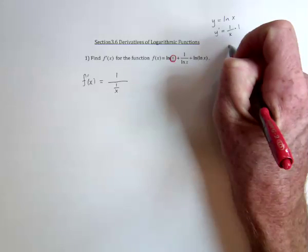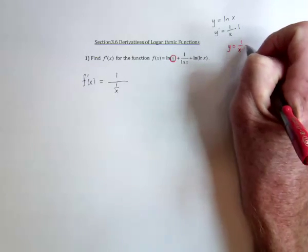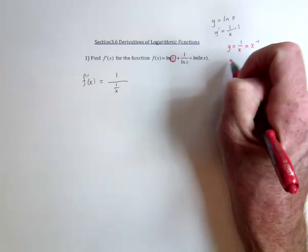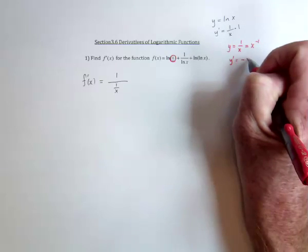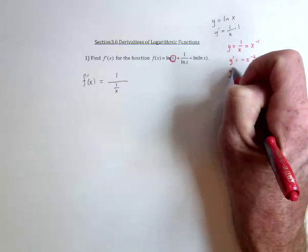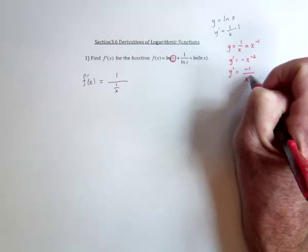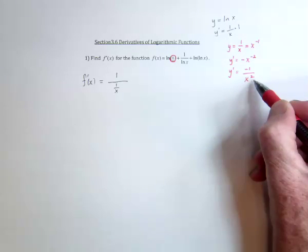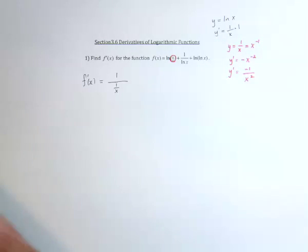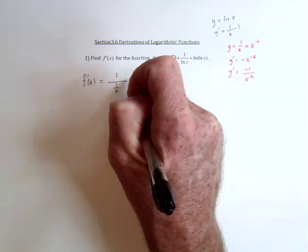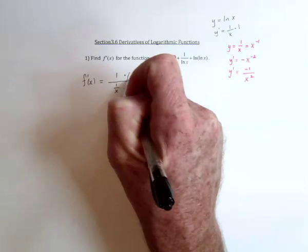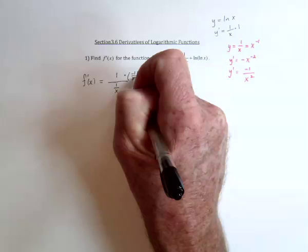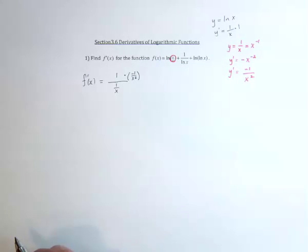If you had y equal to 1 over x, rewrite that as x to the negative 1. Then the derivative of x to the negative 1 is negative x to the negative 2, which means it's negative 1 over x squared. Or you could just skip those steps and go straight to that. So take this thing and multiply it with the derivative of 1 over x, which is negative 1 over x squared. And then we'll simplify it in the next step.